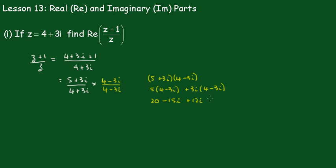Here this becomes 3 times minus 3 is minus 9. So the i squared is minus 1, which makes it plus 9. That becomes 29 minus 3i.